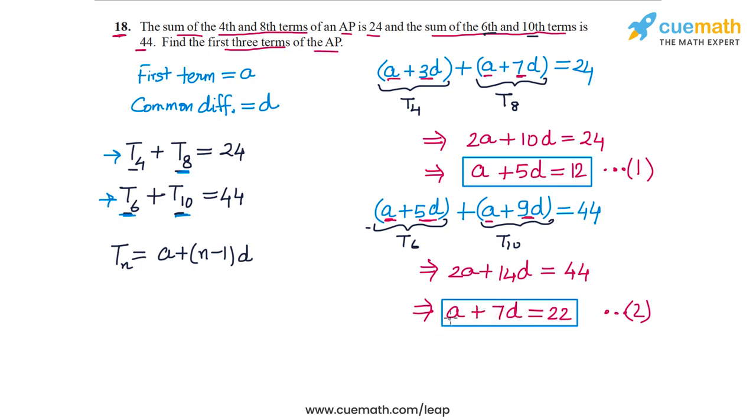I am going to do equation 2 minus equation 1. On the left hand side the A terms will get cancelled out and I will have 7D minus 5D, that's 2D. On the right side I will have 22 minus 12, that's 10. This gives me D equals 5, so the common difference is 5.